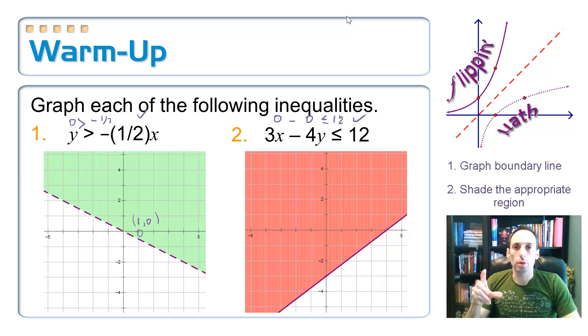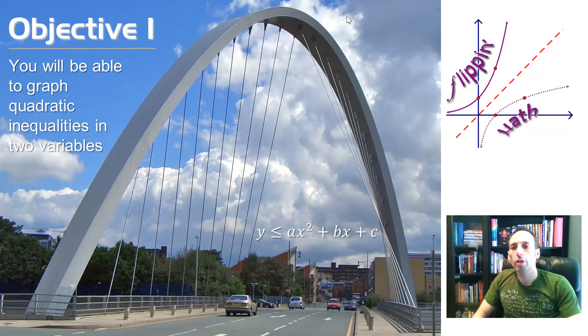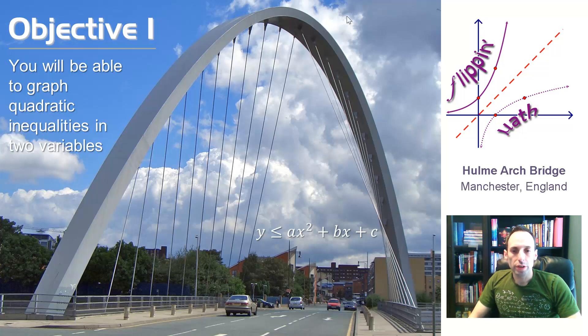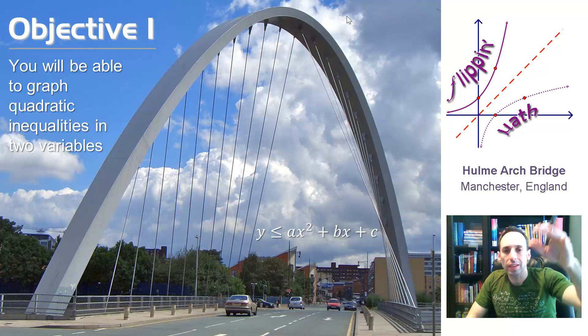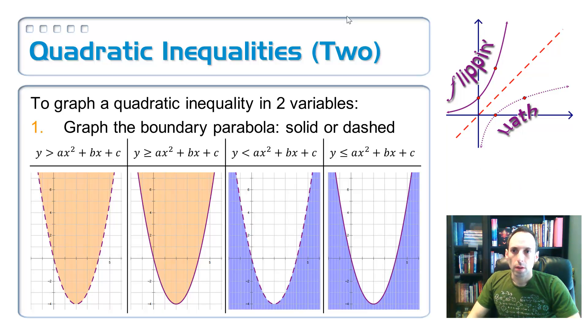Okay. So, whenever we do these four parabolas, we're going to do the same thing. First, you're going to graph the boundary parabola, and then you're going to shade the appropriate region. So, objective one, being able to graph quadratic inequalities in two variables. What you're looking at in this little picture, it's a bridge, it's in England, and the arch there forms like a parabola. And, with the cables coming down, it looks like it's being shaded inside, which is why I said, right down there towards the bottom, that this is y is less than or equal to ax squared plus bx plus c. That's a pretty neat picture.